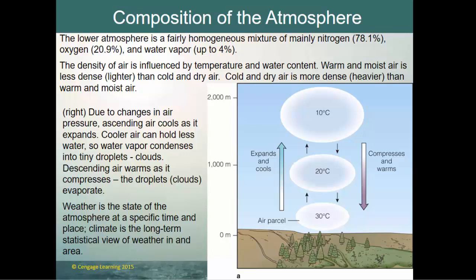Cold and dry air is denser and heavier than warm and moist air. When you add water vapor to air, it replaces oxygen and nitrogen. Looking at atomic structure, water vapor is actually a lighter gas than oxygen or nitrogen. So replacing some nitrogen and oxygen with water vapor in the lower atmosphere makes that more humid air less dense.